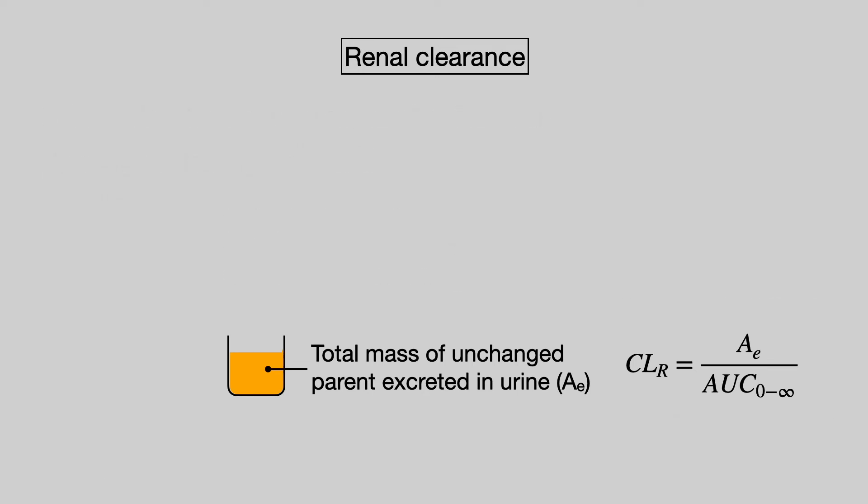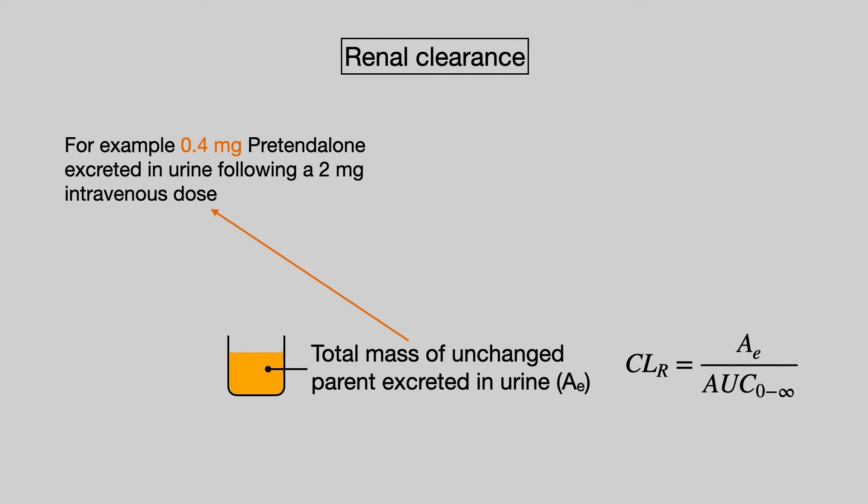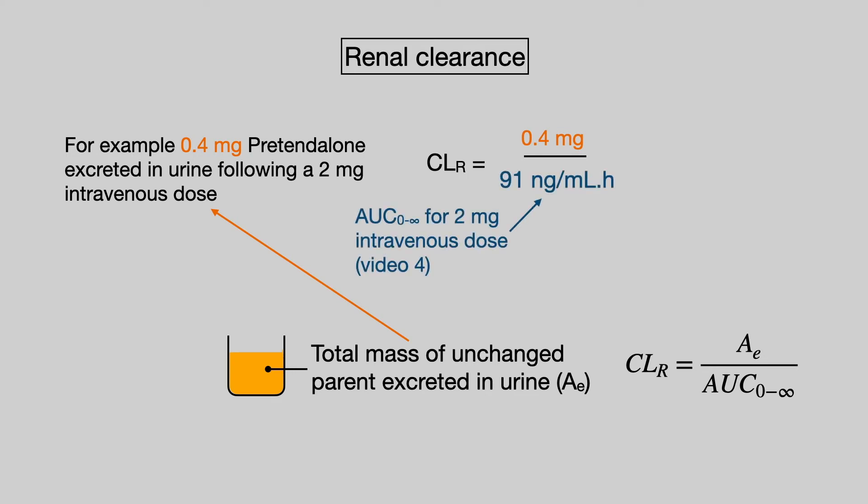For Pretend Alone, 0.4 mg were excreted in urine following the 2 mg intravenous dose. Putting these values into the equation, we find a renal clearance of 4.4 litres per hour.